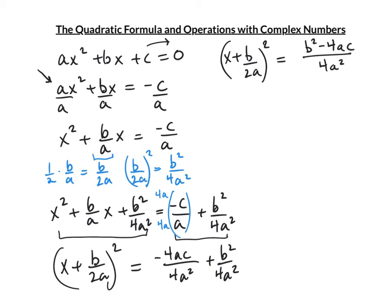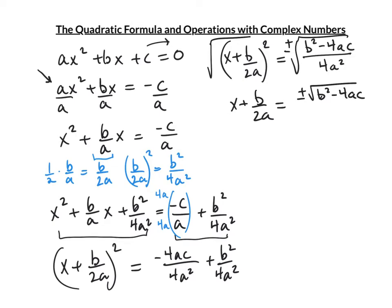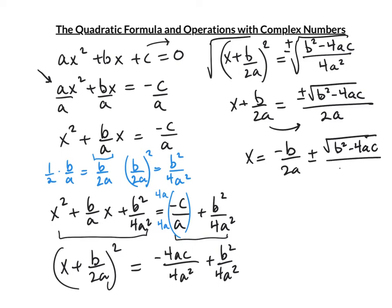Now we're ready to solve. Take the square root of both sides — don't forget the plus or minus. x + b/(2a) = ±√(b² - 4ac) / (2a), since √4 = 2 and √(a²) = a. Move b/(2a) to the other side: x = -b/(2a) ± √(b² - 4ac)/(2a).